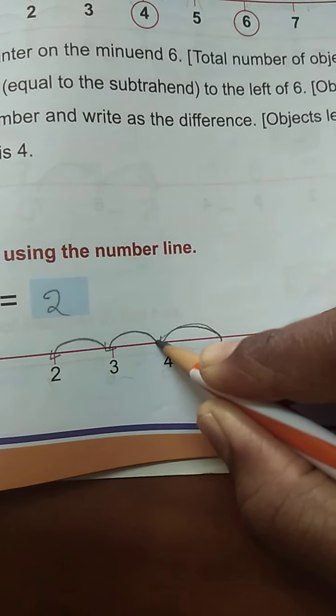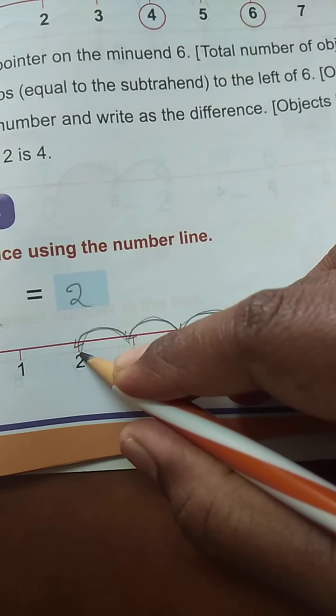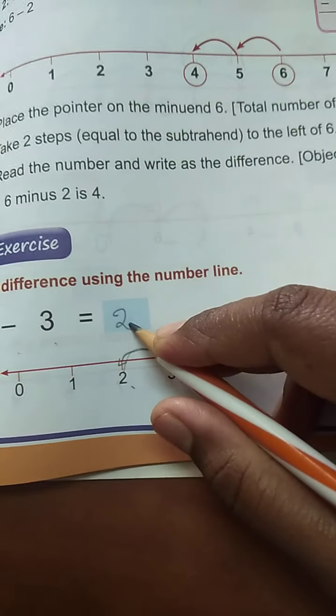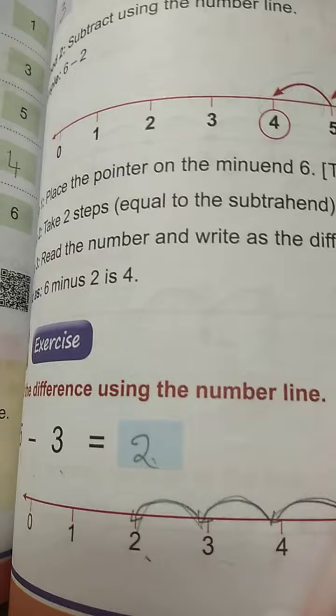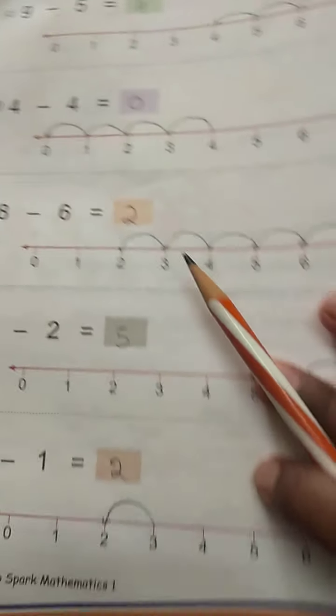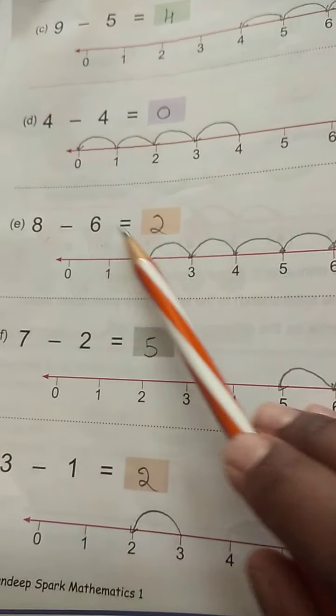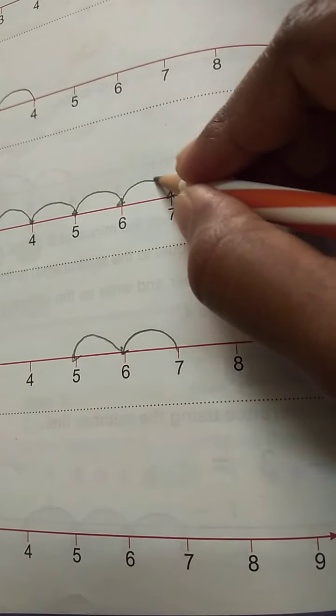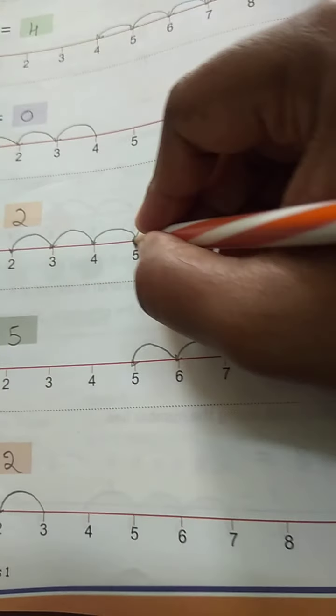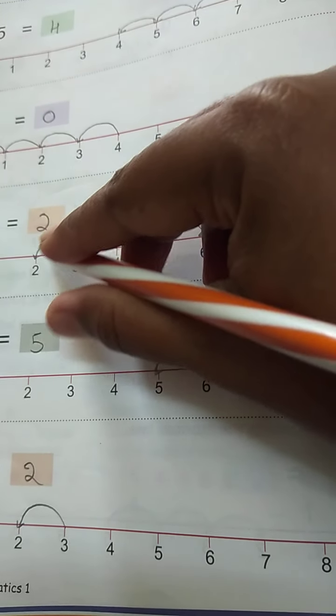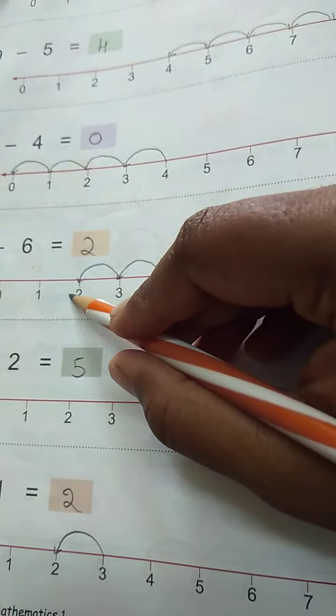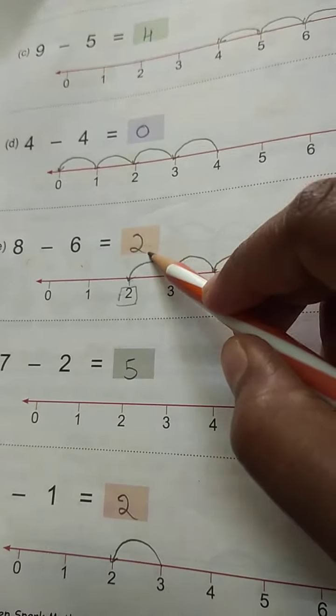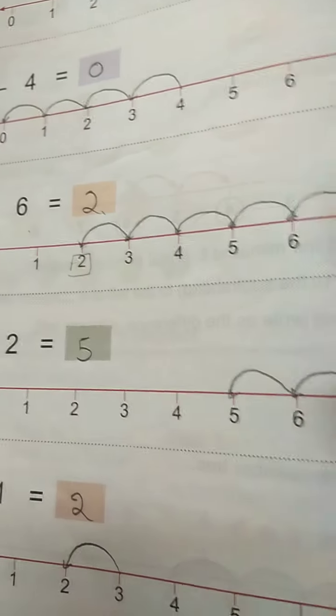So you have to write 1, 2, 3. You have to write 2 here. 1, 2, 3, 4, 5, 6. 1, 2, 3, 4, 5, 6. So 8 minus 6 is 2. So this is how you do by using number line method.